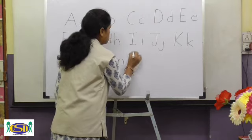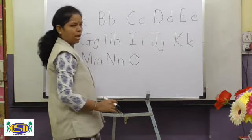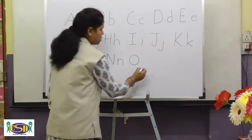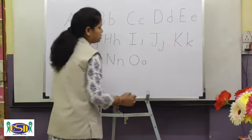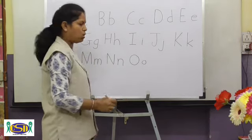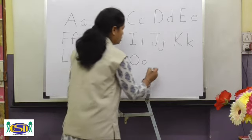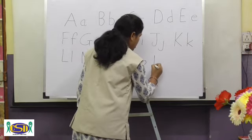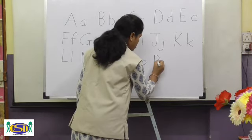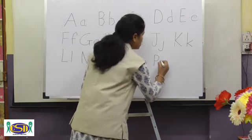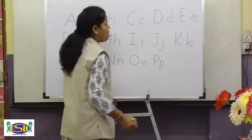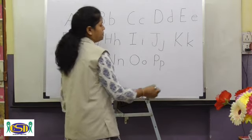Circle — capital O. Small circle — small o. Standing line, left curve — capital P. Standing line, left curve — small p.